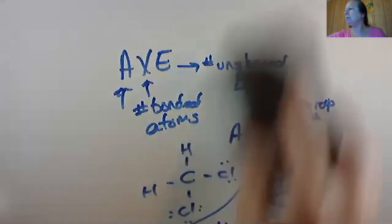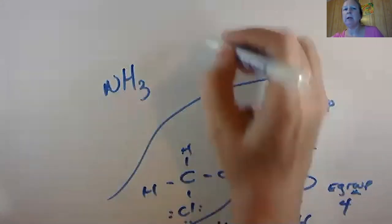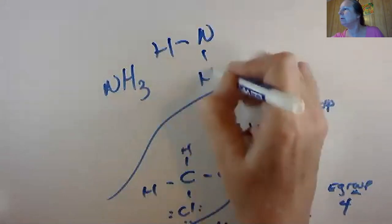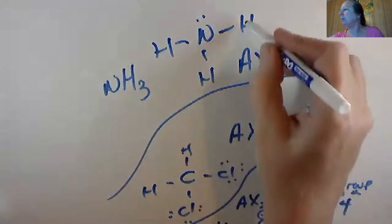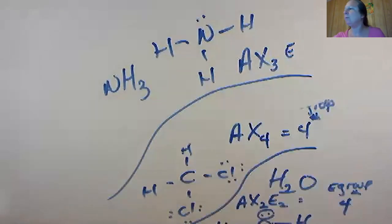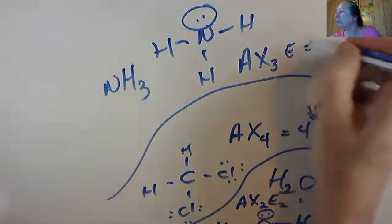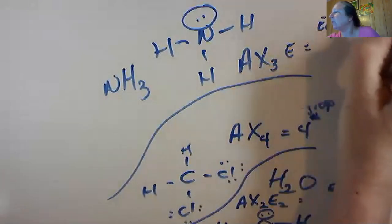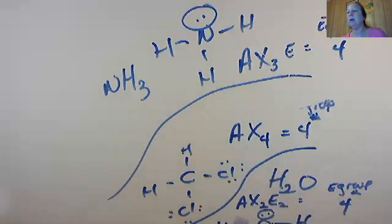For ammonia (NH3), the Lewis structure shows nitrogen with three hydrogens attached and one unshared pair. AXE: A is nitrogen, X is three (three atoms attached), E is one (one unshared pair) — giving AX3E. The electron group number is four (three plus one), which is the tetrahedral arrangement. So all three — CH2Cl2, water, ammonia — are tetrahedral electron group arrangements, but they all have different molecular shapes.